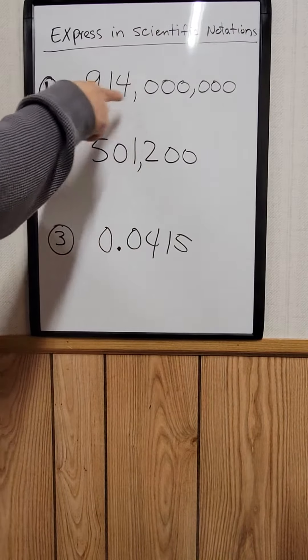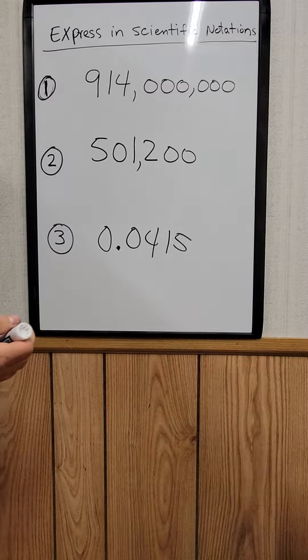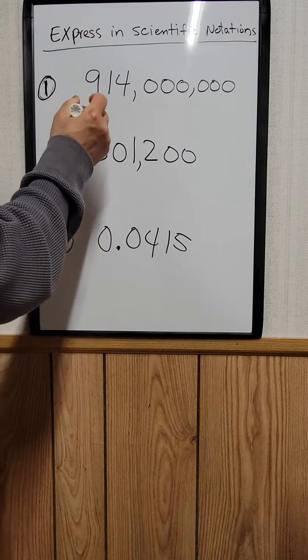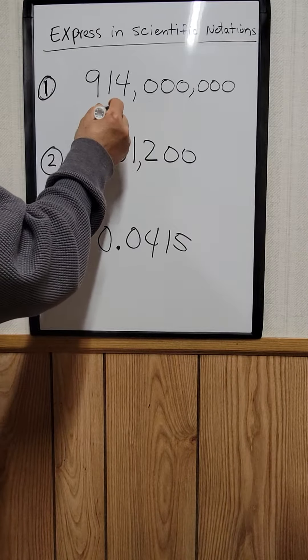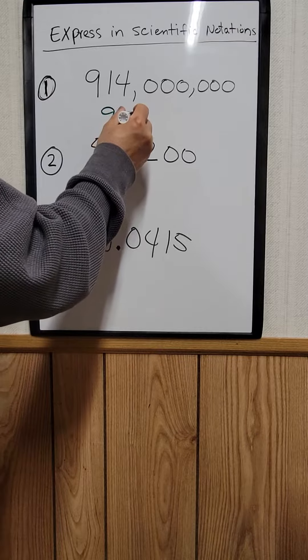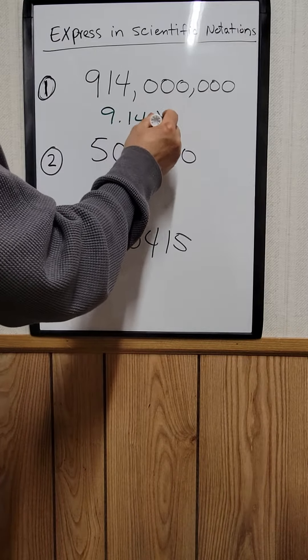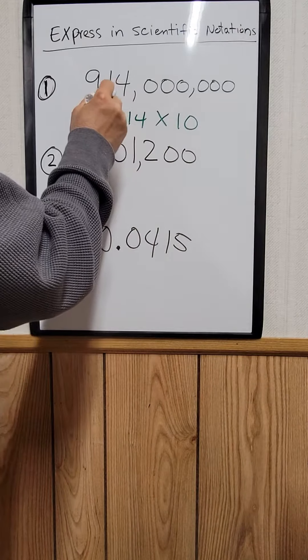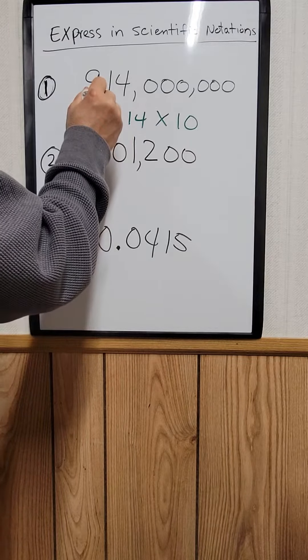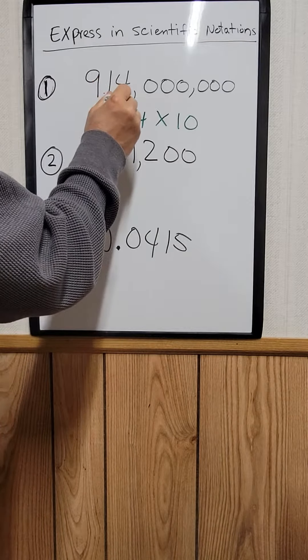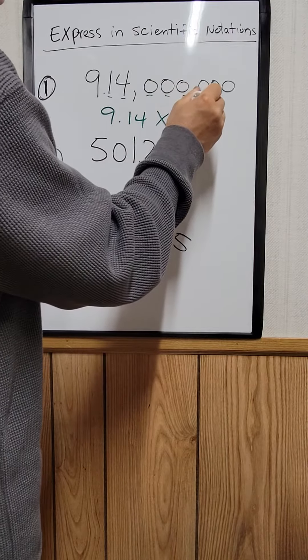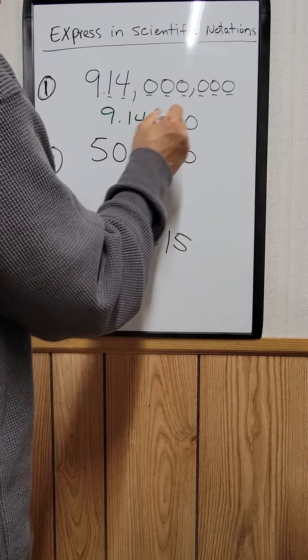Let's express the following in scientific notation form. So for this one, all you need to do is just write 9.14 times 10. You count how many zeros after the decimal point from here: it is 1, 2, 3, 4, 5, 6, 7, 8, so to the 8.